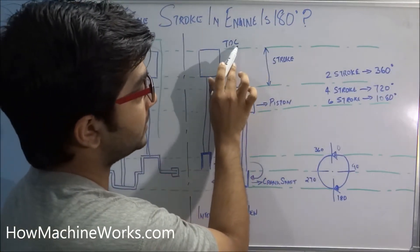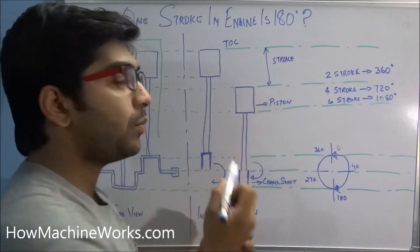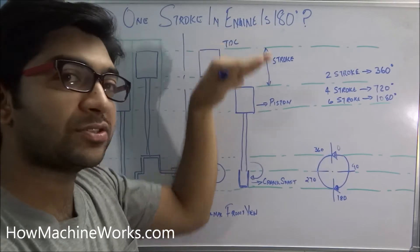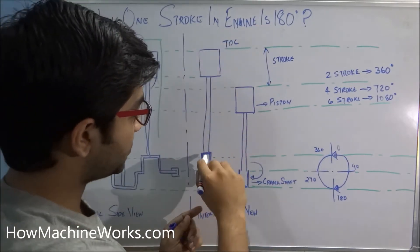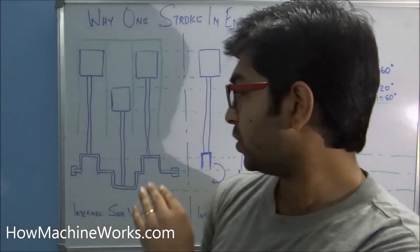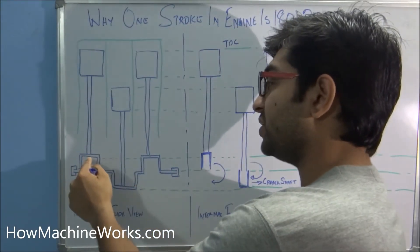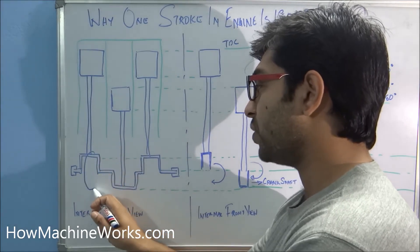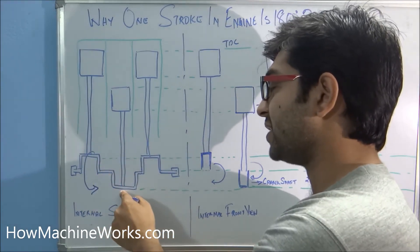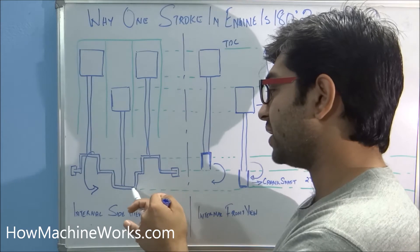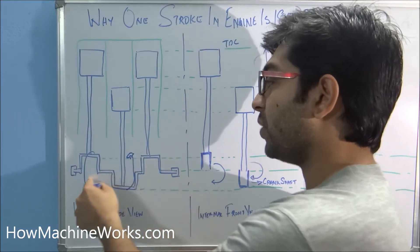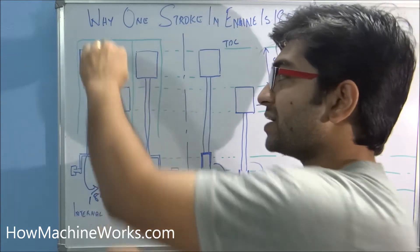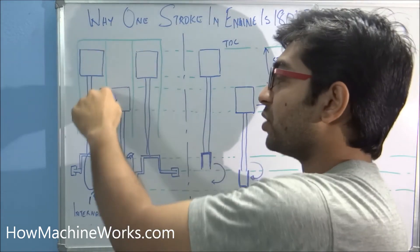When the piston moves from top dead center to bottom dead center, what makes this stroke happen? It happens when the crankshaft rotates. The connecting rod is fixed here, and when the crankshaft makes a rotation, it moves from top towards the bottom. It can also move upwards — that is 180 degrees of rotation happening for one stroke, as the piston travels from top to bottom.